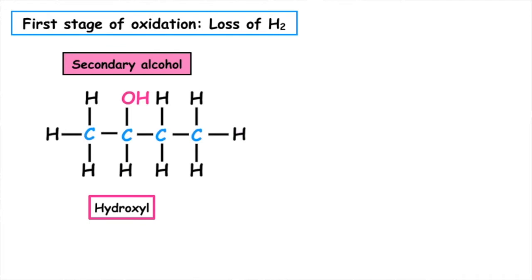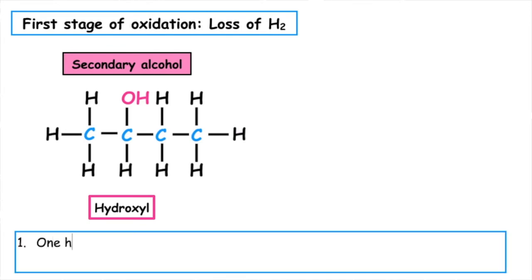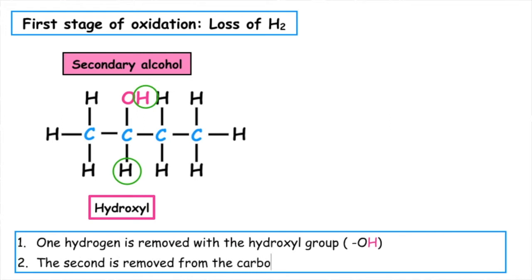The first stage of oxidation is the loss of hydrogen. One hydrogen is removed from the hydroxyl group and the second is removed from the carbon which contains the hydroxyl group.